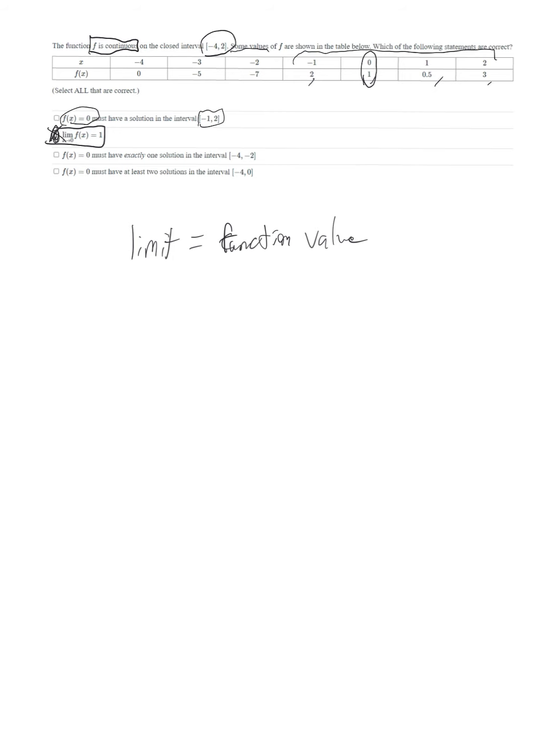Now, the next statement, f of x equals 0 must have exactly one solution in the interval negative 4 to negative 2. Notice, in this interval, negative 4 to negative 2, we actually have a 0, we have a negative 5, we have a negative 7. So, we know that there's at least one solution, but we don't know anything about what f of x looks like. It could look something like this. The point being, you have no idea how many solutions something might have. So, saying there's exactly one is not applicable.